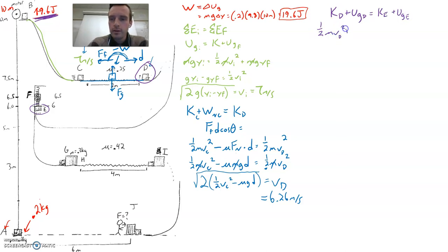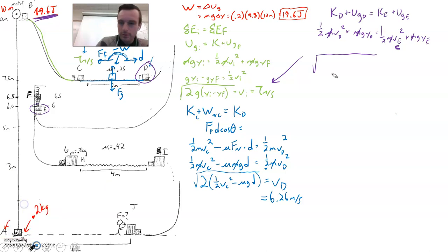One-half MVD squared plus MGYD equals one-half MVE squared plus MGYE. Lots of stuff going on, but check this out. Mass cancels. Every term has a mass. Mass can cancel out. And we are looking for the speed at point E. It's starting to look familiar. If you look back at our green example, it's going to take on a similar type of deal.